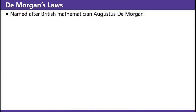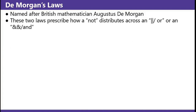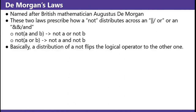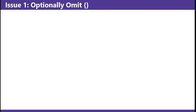De Morgan's Laws — named after a British mathematician, Augustus De Morgan. These two laws prescribe how a NOT distributes across an OR or an AND. NOT (A AND B) becomes NOT A OR NOT B. NOT (A OR B) becomes NOT A AND NOT B. Basically, a distribution of a NOT flips the logical operator to the other one.